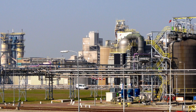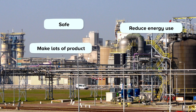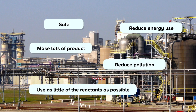Chemical engineers design these factories to make sure they work as efficiently as possible. This makes sure that the manufacturer can make money but limits the impact on the environment. They need to make sure the working environment is safe, uses as little energy as possible, makes lots of product to sell, reduces the pollution and impact on the environment, and uses as little of the reactants as possible.